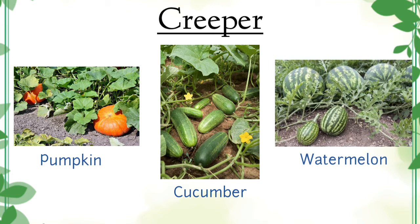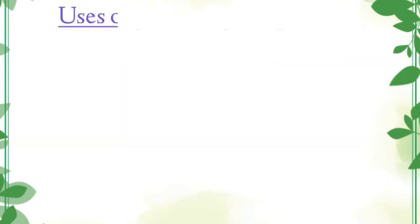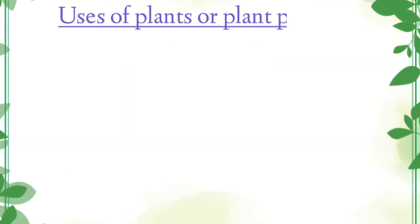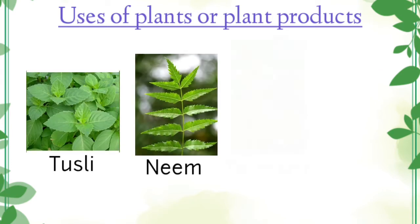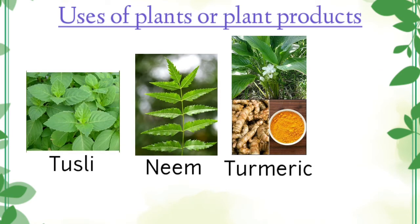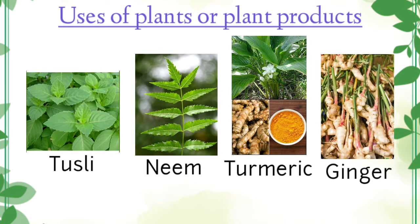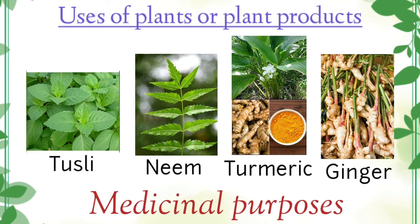Now children, let us learn about uses of plants or plant products. Plants are used to make medicines. Plants such as tulsi, neem, turmeric, ginger, etc. are used for medicinal purposes.